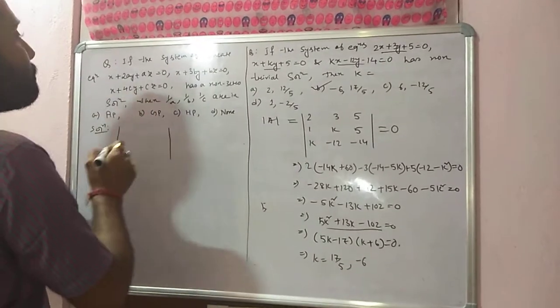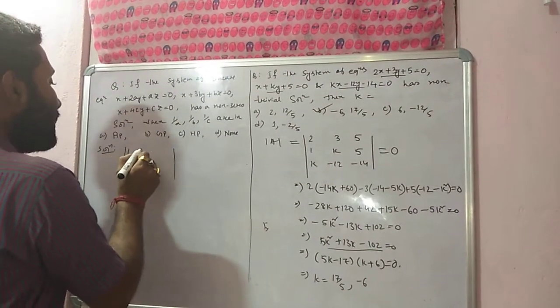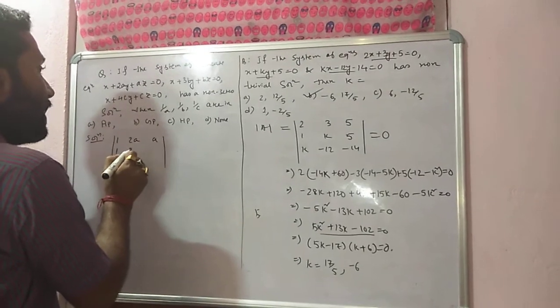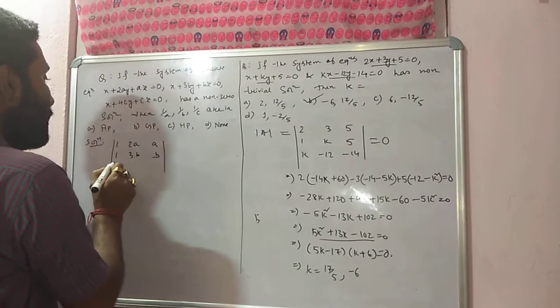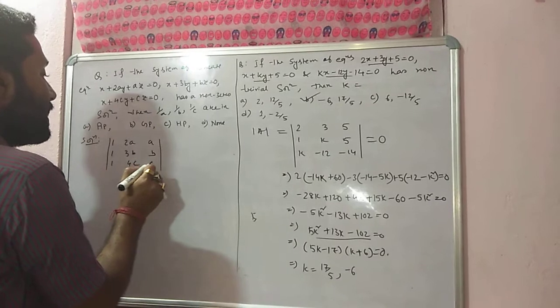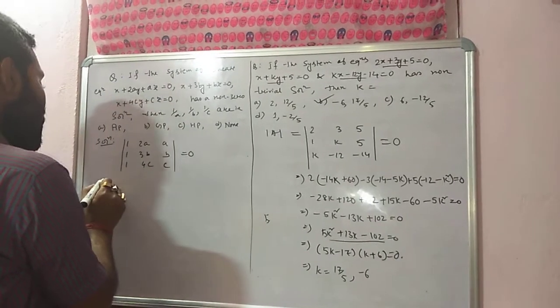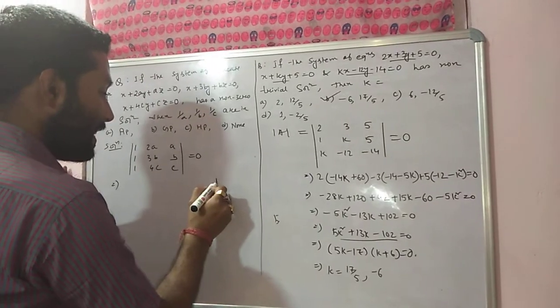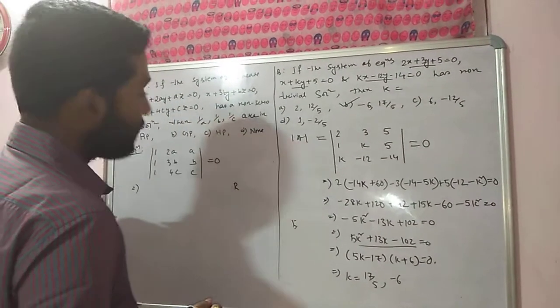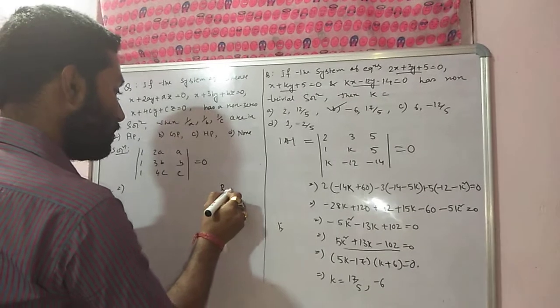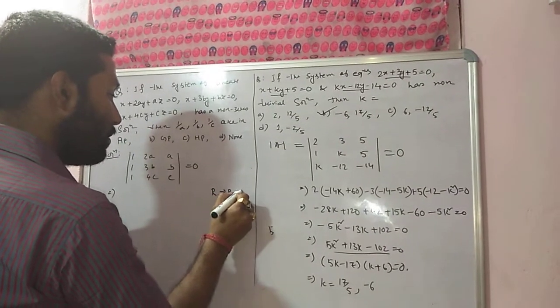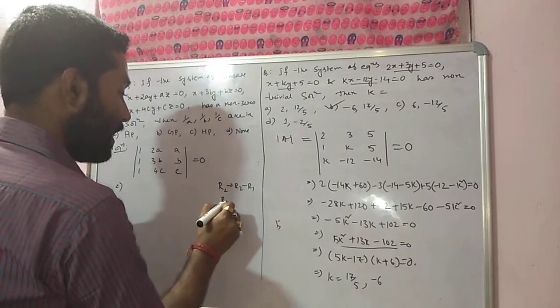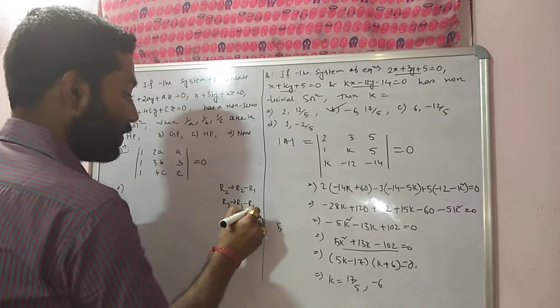So determinant 1, twice A, A, 1, 3B, B, 1, 4C, C is equal to zero. Instead of just expanding, if we use some row or column operation, it becomes very easy. If I use R2 implies R2 minus R1 and R3 implies R3 minus R1.